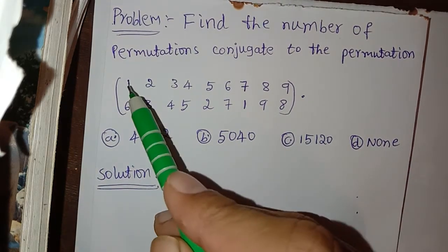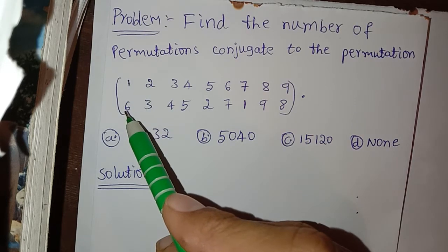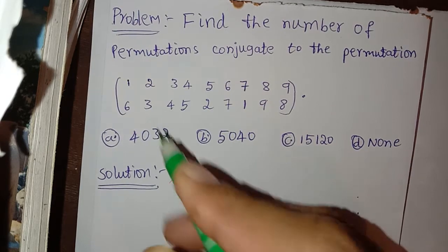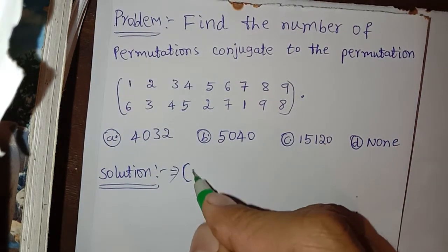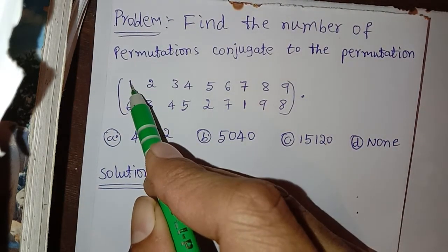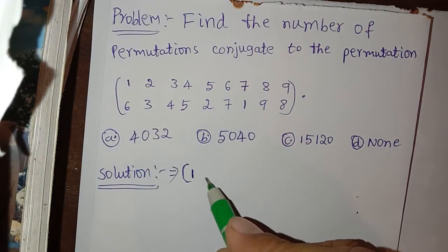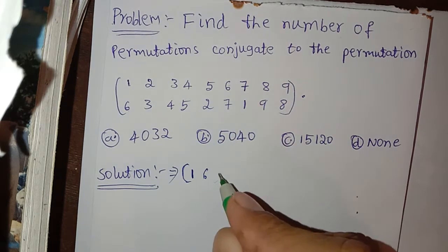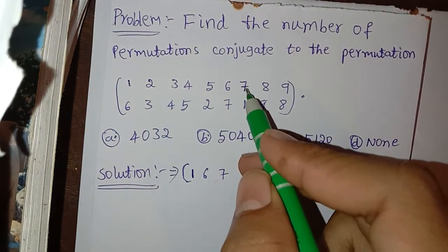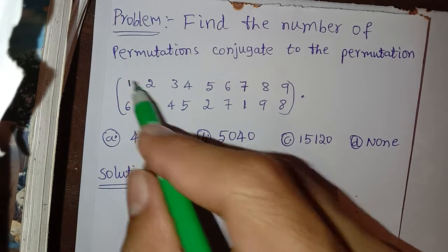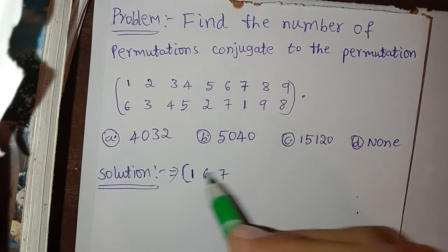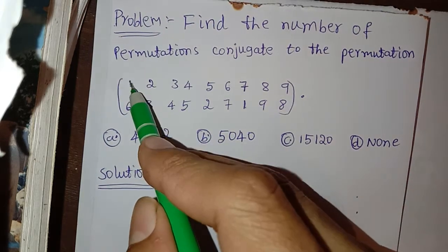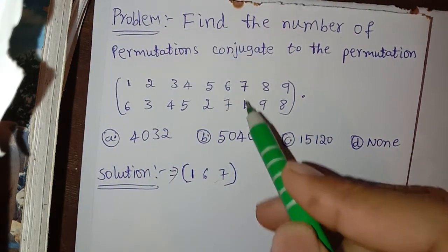For one, we have six. So we can write one, and for one here six. For six, what is there? For six here seven. So seven. For seven, what is there? For seven here one. One is what we wrote in the beginning. So this is one cycle: (1, 6, 7).